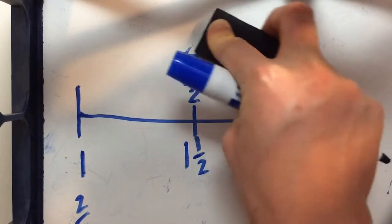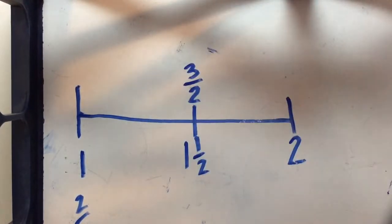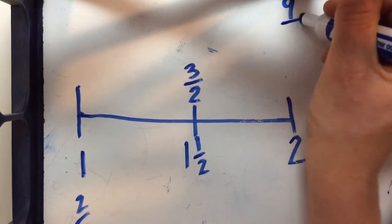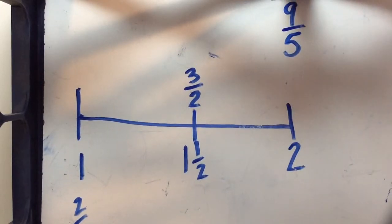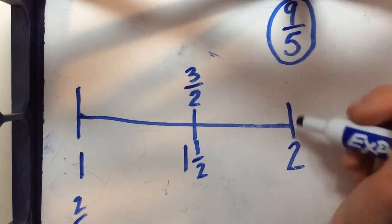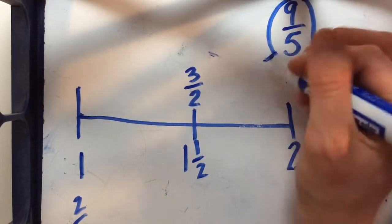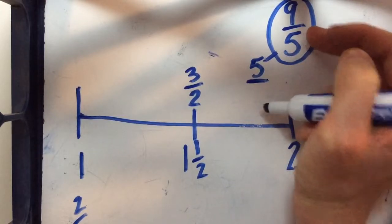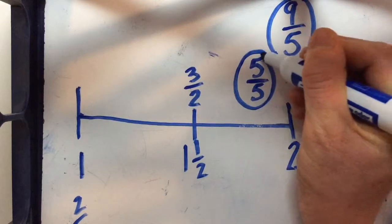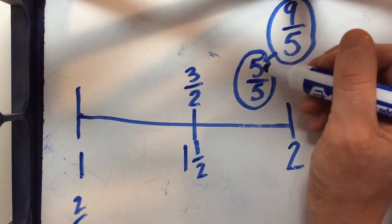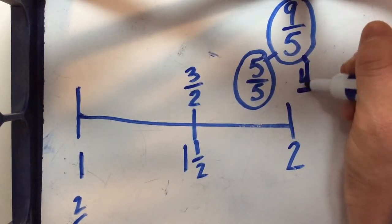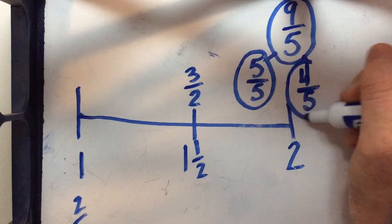The next fraction we're going to plot so we can compare it is 9 fifths. So again let's just go ahead and make our bond, decompose it so I know that to make 1 whole I need 5 fifths. Our denominator tells us how many parts go in a whole and if I have 9 fifths then 5 fifths plus 4 more fifths will give me 9 fifths.